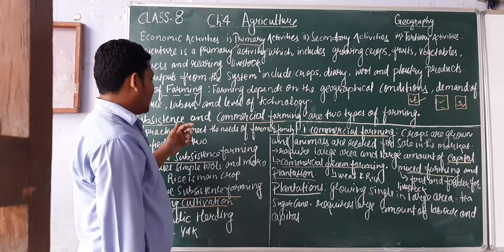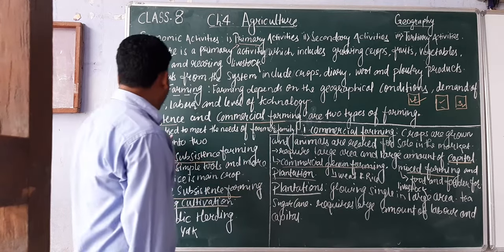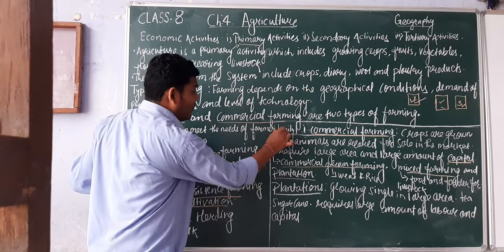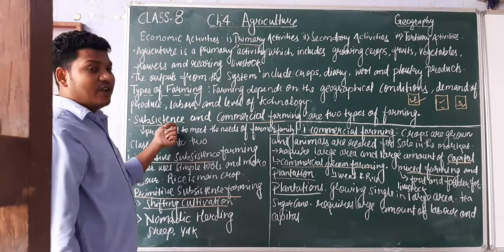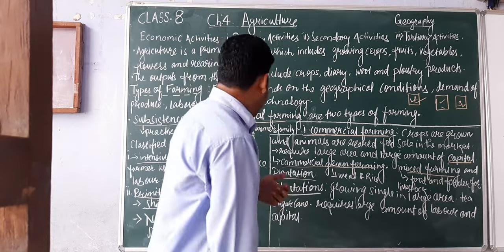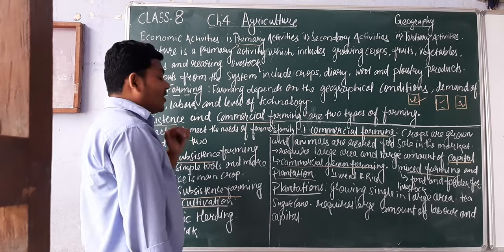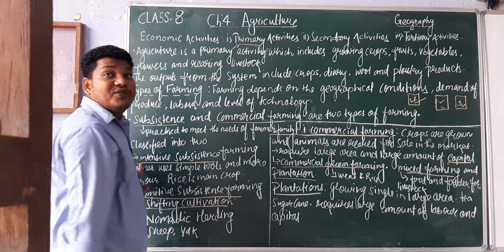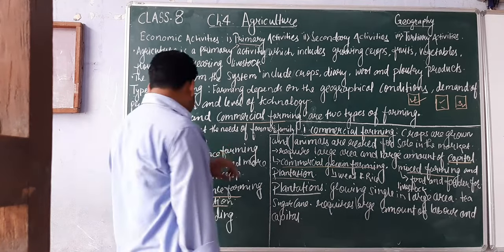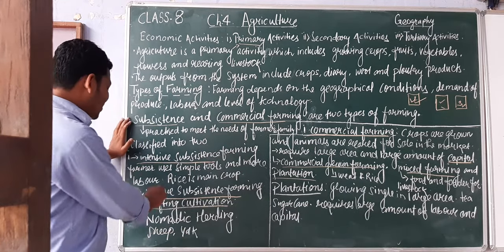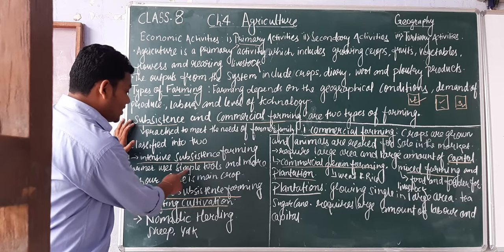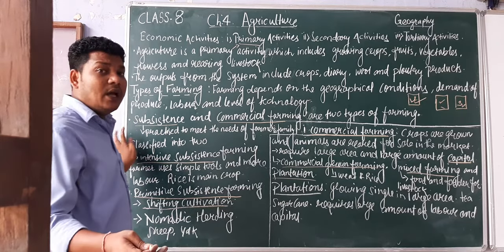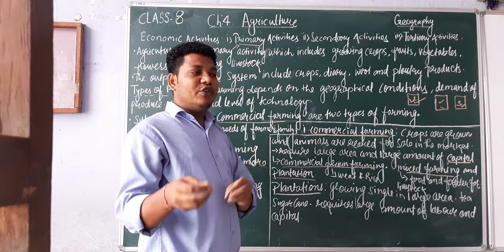Subsistence farming and commercial farming are the two main types of farming. Subsistence farming means farming practiced to meet the demands of the farmer's own family. Under subsistence farming, one type is intensive subsistence farming, where farmers use simple tools and more labor — meaning many people are involved in cultivation.